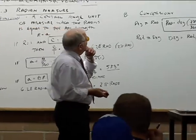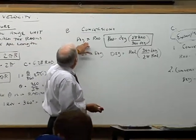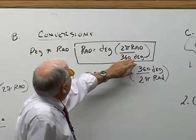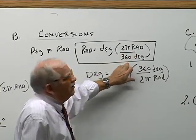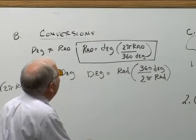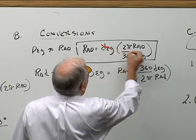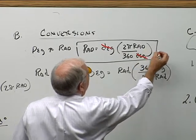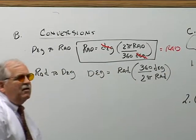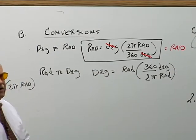Now, I put the conversions on the board here for you. If I want to go from degrees to rads, rad equals degrees times the quantity 2π rads over 360 degrees. That's your conversion right there. And as I had done in the previous time, degrees cancel out degrees, my answer turns out to be rads.